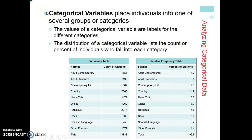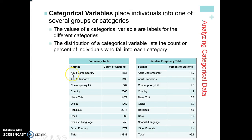Categorical variables place individuals into one of several groups or categories — we're sort of putting them into bins. The values of the categorical variable are labels for the different categories. The distribution of a categorical variable lists the count or percent of individuals that fall into each category. Think of it as different bins sitting in front of you: you're putting people in the bins, so what would you label the bins? We're going to talk about music and the type of music people like to listen to.